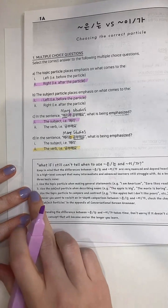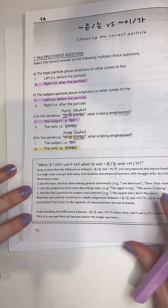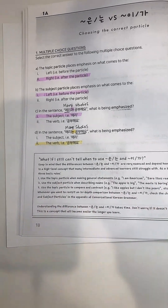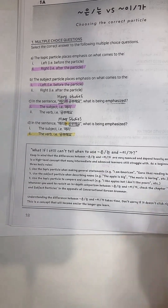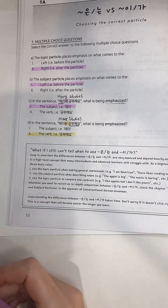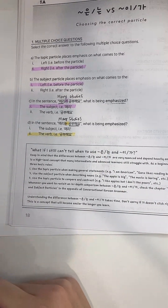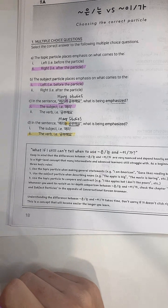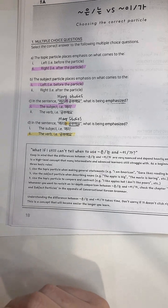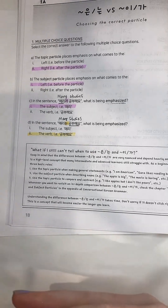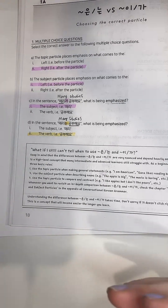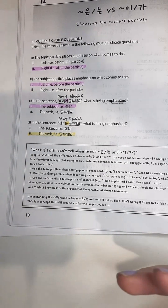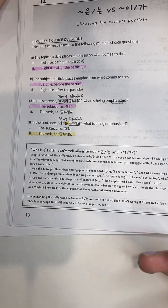Rule one: use the topic particle when speaking about Meri as a topic — you're talking about Meri, and you're emphasizing what she's doing. Using 는 means: 'speaking about Meri, she is studying.' Meri is the topic of the sentence, and you're emphasizing the action she is doing, which in this case is studying.